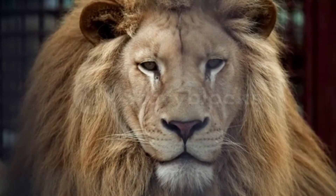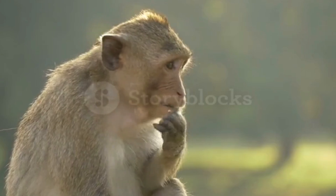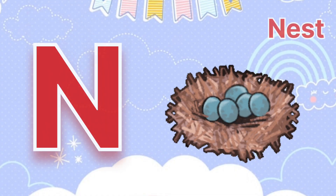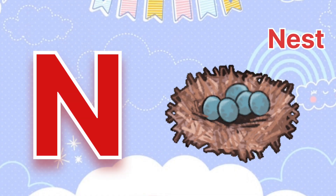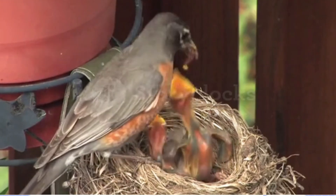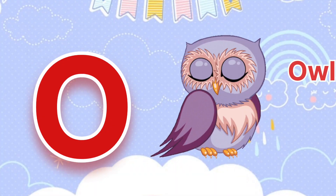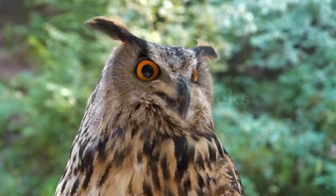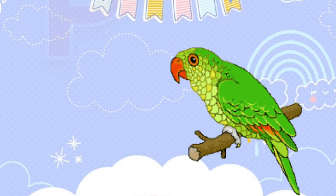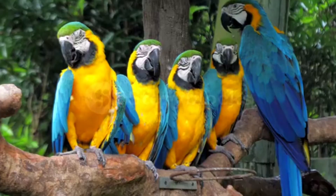M is for Monkey. N is for Nest. O is for Owl. P is for Parrot.